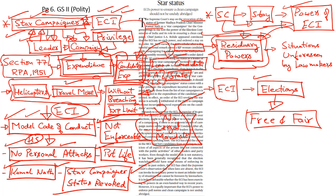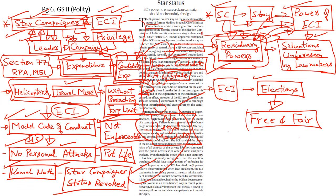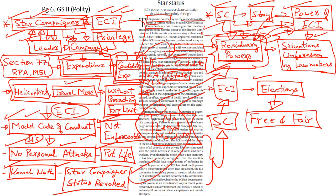Residuary powers are nothing but the powers and functions that are not specified through any law because the lawmakers may not have foreseen such situations. In such a case, the authority concerned can invoke their residuary powers in order to fulfill their mandate and responsibilities. On many occasions, the Supreme Court itself has made use of its residuary powers while passing judgments. So the Election Commission has also cited the same observation while enforcing the model code of conduct. But right now, the Supreme Court has intervened and issued a stay order on the revocation of the star campaigner status, thereby directly interfering with the powers of the Election Commission. The editorial takes a stand against this judicial intervention because it could threaten and disrupt the conduct of free and fair elections.